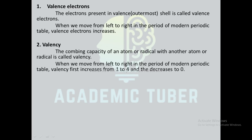Next one is valence: the combining capacity of an atom or radical with another atom or radical is known as valence. When we move from left to right in a period of the modern periodic table, valence increases from 1 to 4 and then decreases to 0.